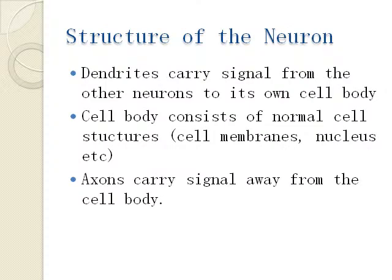Dendrites carry signals from other neurons that have their synapse attached to them, into their own cell body. Dendrites actually look like branches attaching to the cell body. What happens is the other neuron's synapse attaches to the dendrites of the current neuron, and the dendrites then connect to the cell body.